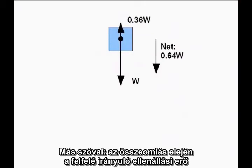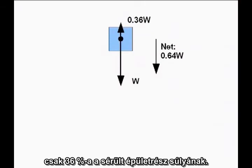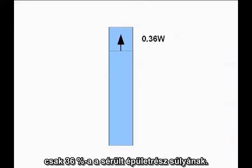In other words, once it starts falling, the upward resistive force is only 36% of the weight of the falling section of the building. So far, so good.